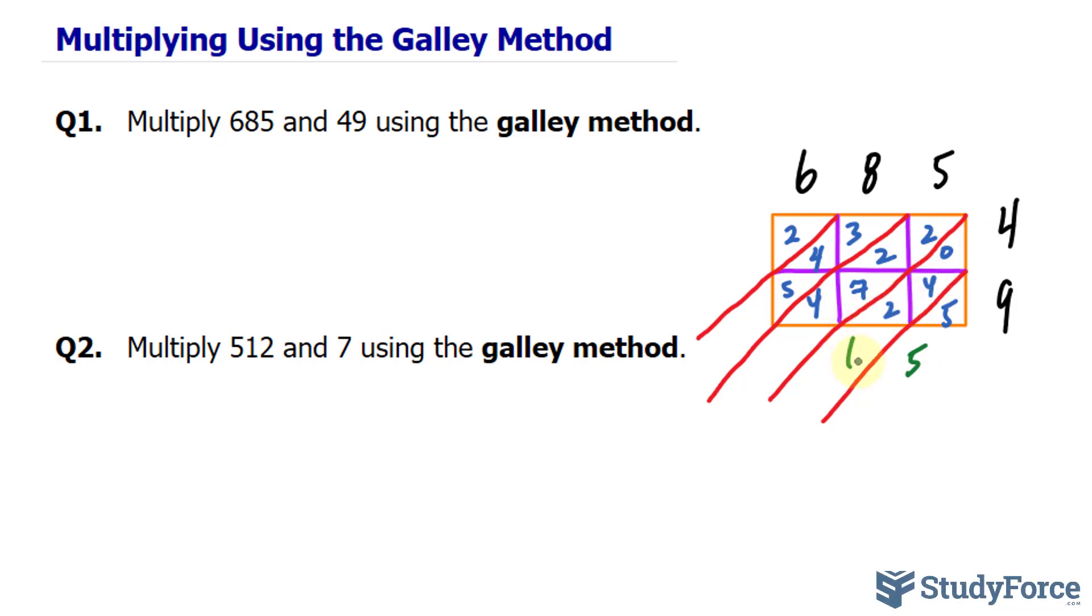2 plus 4 is 6. 2 plus 2 plus 7 plus 4. 2 plus 2 is 4. Plus 4 is 8. Plus 7 is 15. We write down 5 and carry the 1 to the next diagonal.